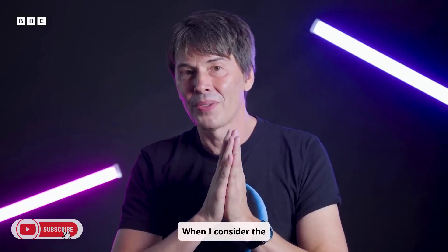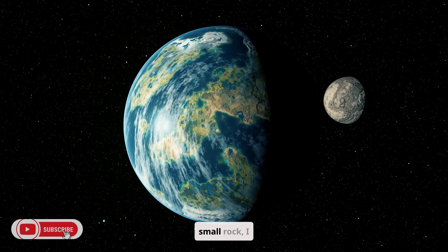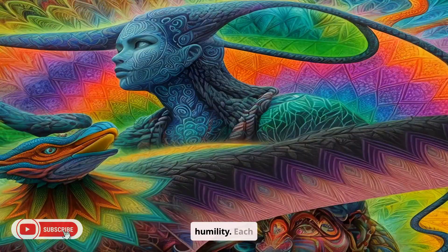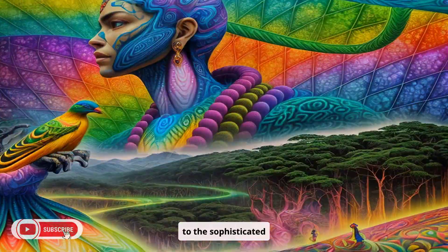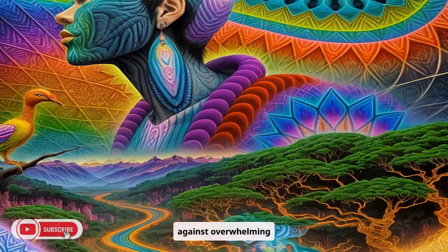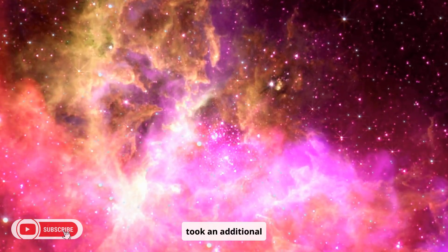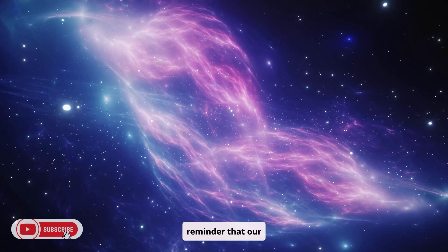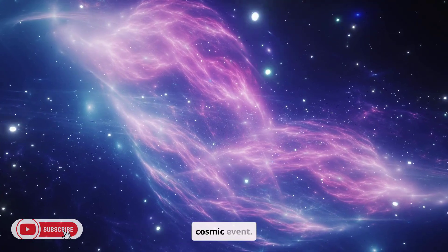When I consider the unbroken chain of life that has persisted for nearly four billion years on this small rock, I am filled with both awe and humility. Each organism, from the earliest single-celled beings to the sophisticated creatures of today, represents a miraculous continuation of life against overwhelming odds. The emergence of intelligence itself took an additional half-billion years after multicellularity, a reminder that our ability to reflect and question is not an inevitability but a rare cosmic event.